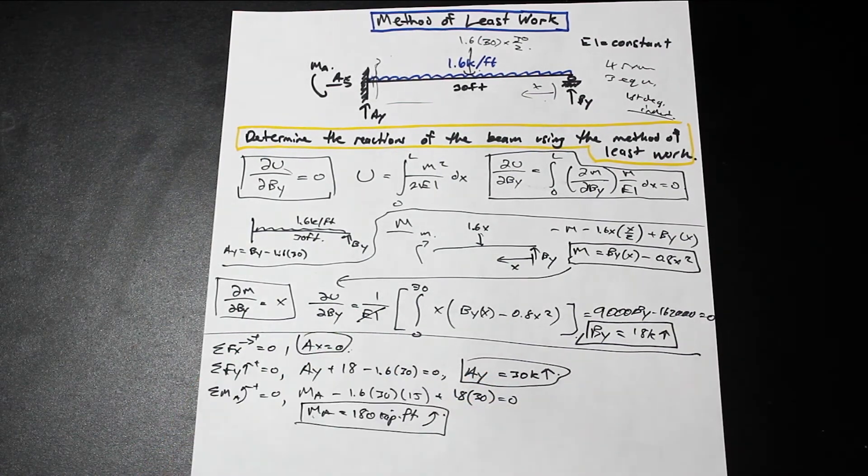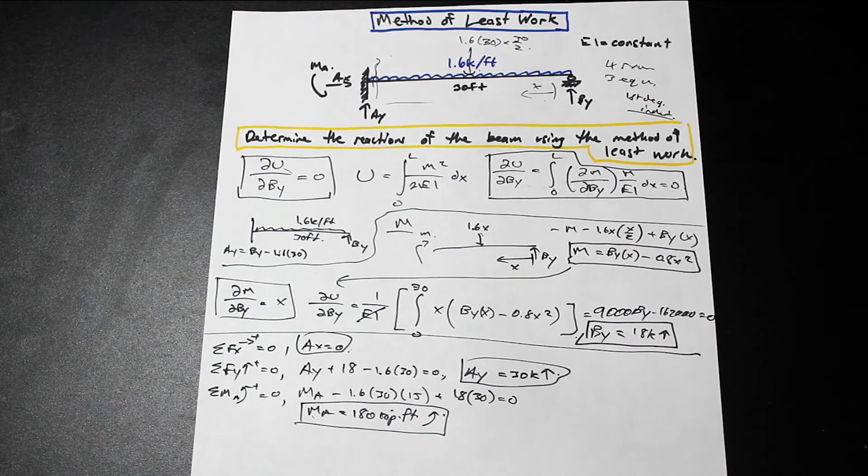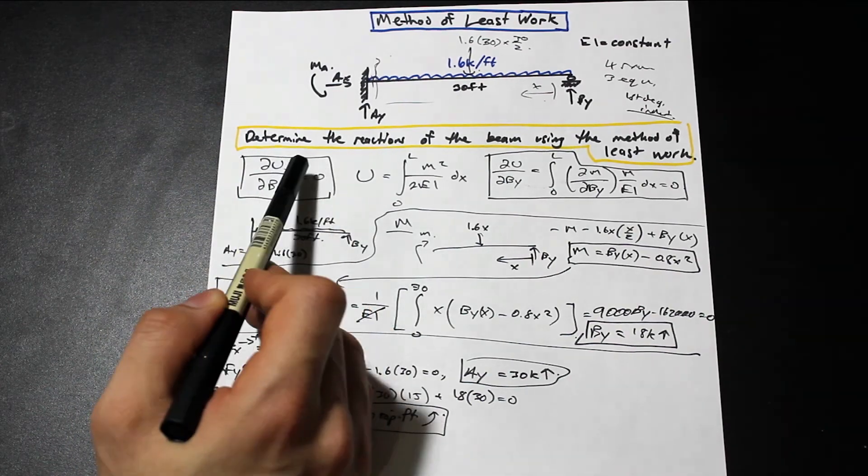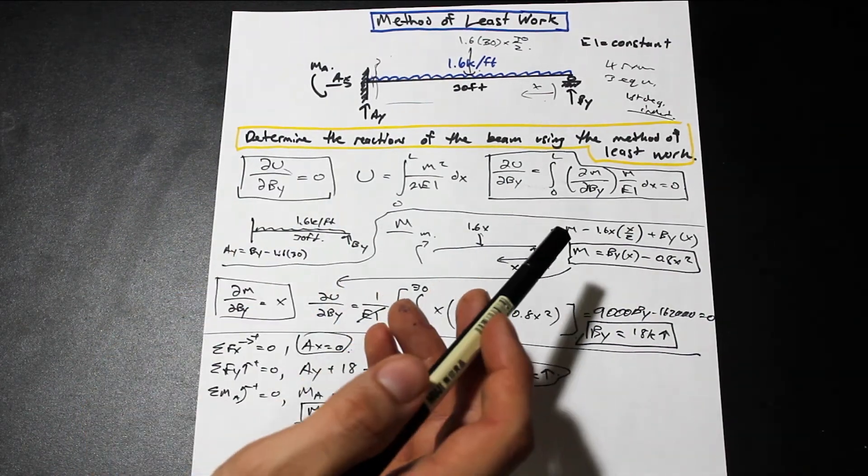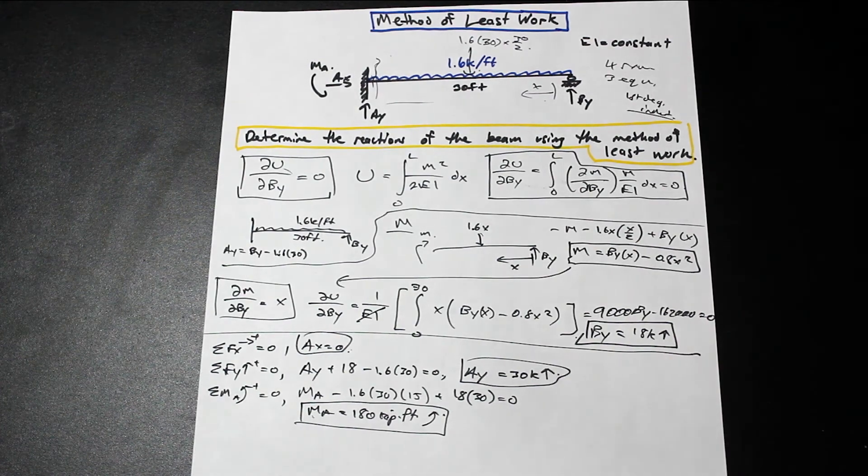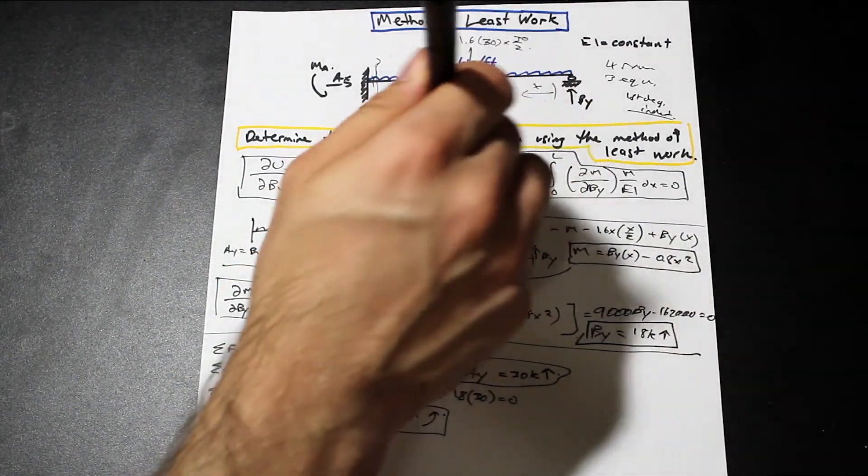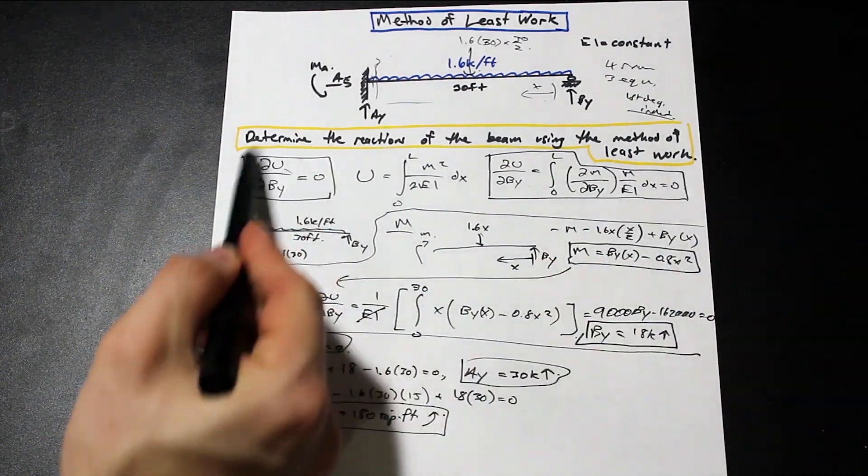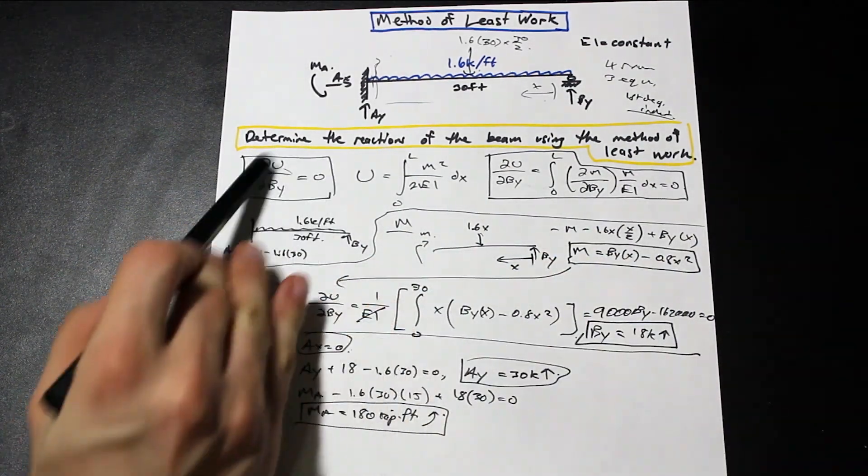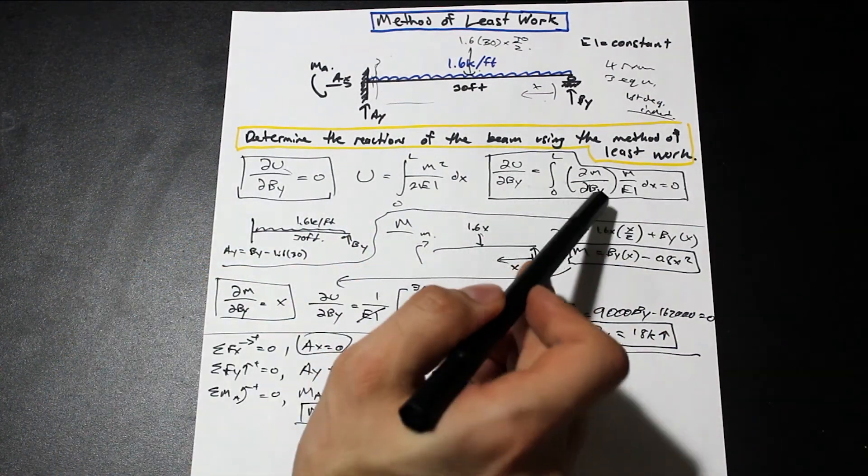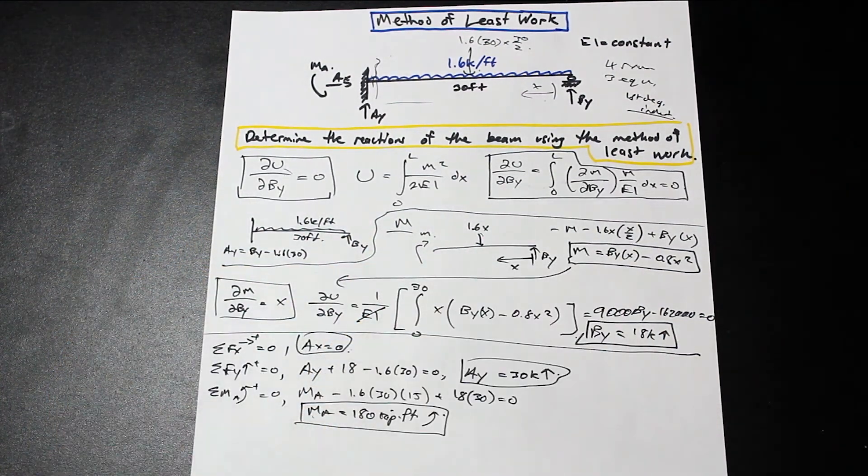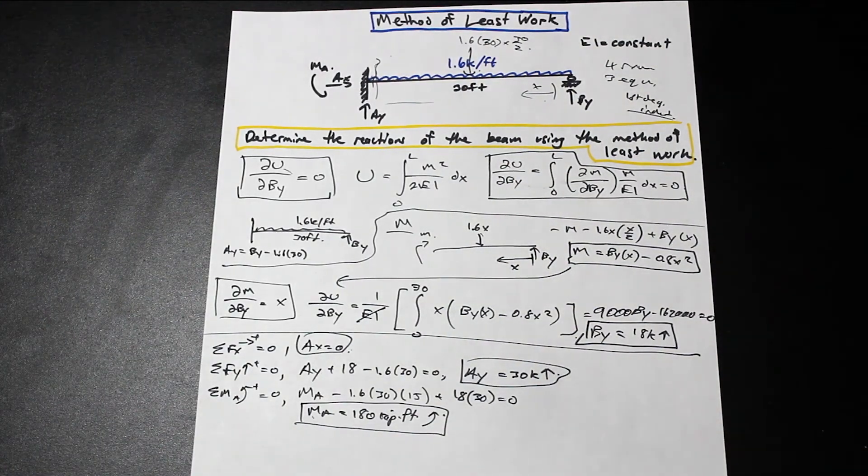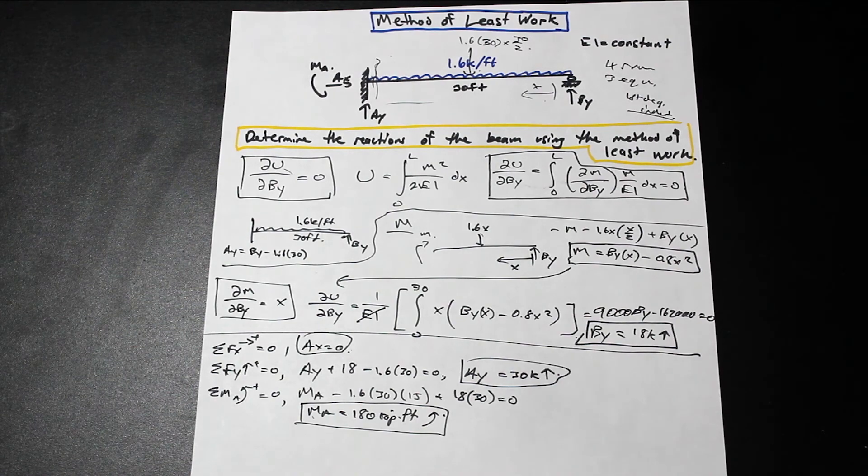So we solved for the reaction. We didn't get too much into the derivation there, but it is important to note, and the thing to take away here, is that the partial derivative with respect to BY of the strain energy must equal 0 for the redundant. And as a result of that, we can come up with this new equation using the strain energy for a beam. And we can equate it to 0, because we made this very clear here, that this is equal to 0. By doing that, we have one unknown BY, which we can solve for. And then we can go ahead and find the rest of the reactions. So I hope that video helped you guys. Thank you for watching. And as always, hit the like and subscribe button. Take care.